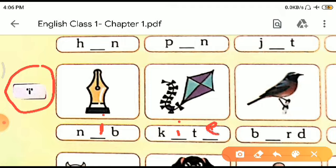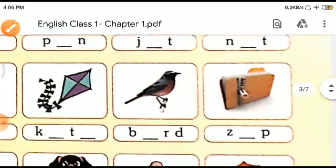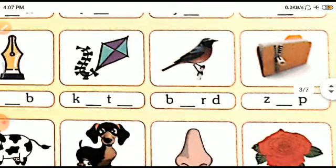What is the spelling of kite? K-I-T-E. So, we will write I here and we will write E here. Third one is a bird. B-I-R-D, bird. So, what is this fourth one? It is a zip. Z-I-P, zip.